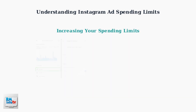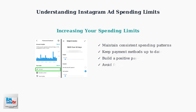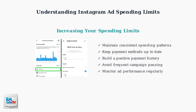Your spending limits can increase over time through consistent behavior. Maintain regular spending patterns, keep payment methods current, build a positive payment history, and avoid frequently pausing campaigns. These practices demonstrate reliability to Meta's system and can lead to higher spending limits.